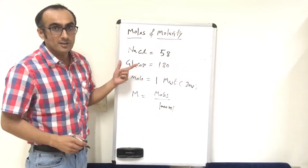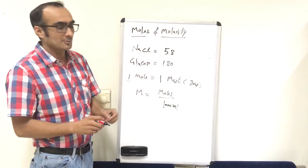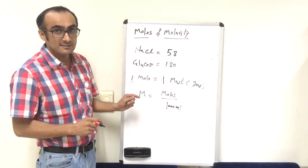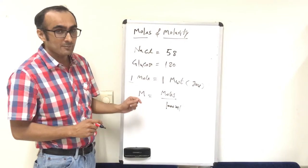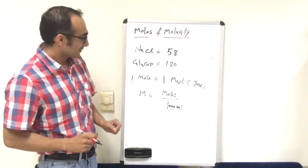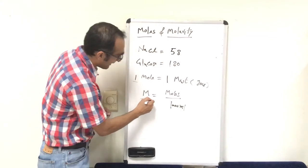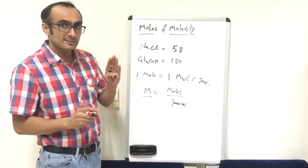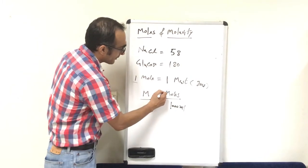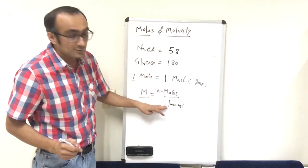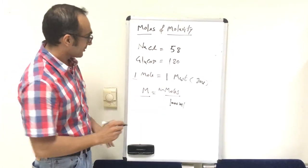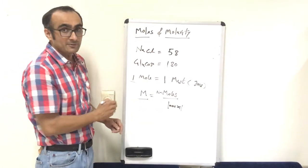So, one mole of a substance is equal to one molecular weight of that substance in grams, or one Avogadro's number in terms of number of molecules. We can now define molarity: the molarity of a substance equals the number of moles dissolved in one liter or 1000 ml of solvent.